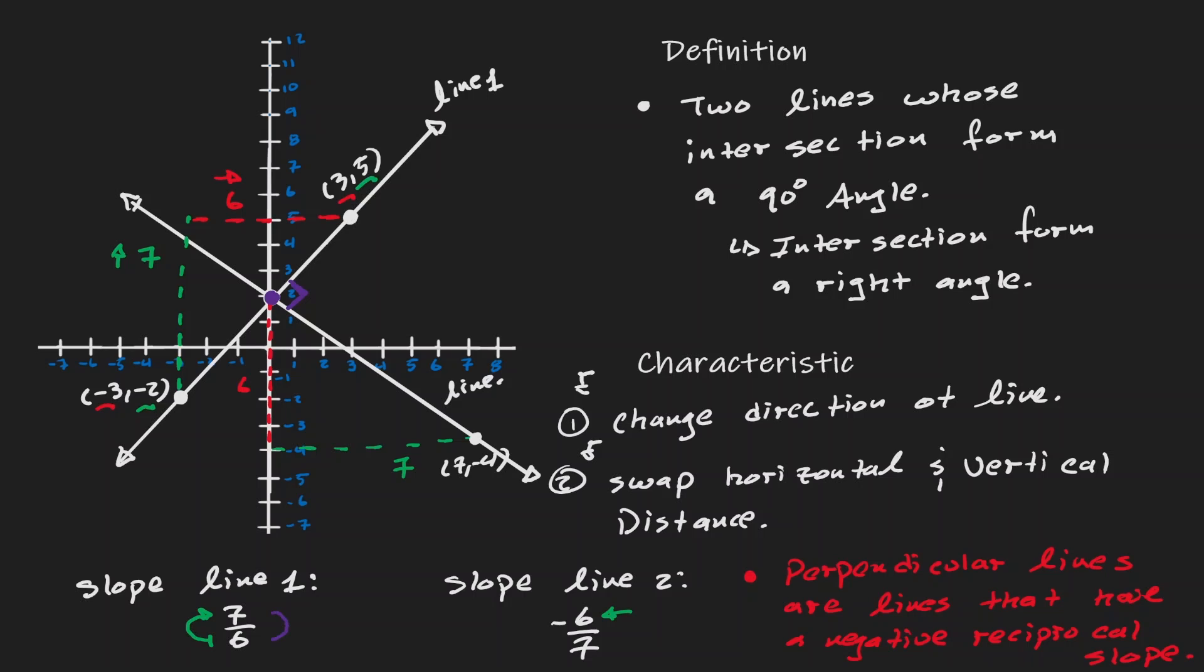And 7, if I bring it down, I end up with the denominator, which is the horizontal distance of the second slope. And we need to place a little negative in front of the second line because we want to change direction.